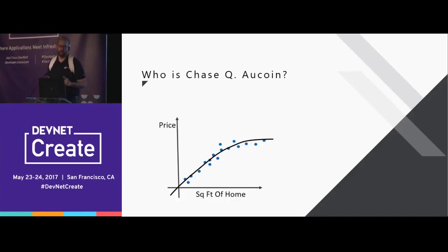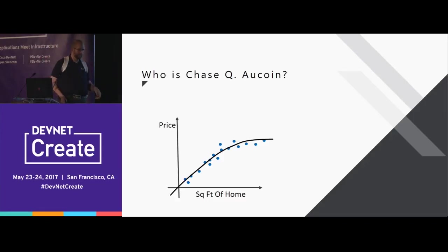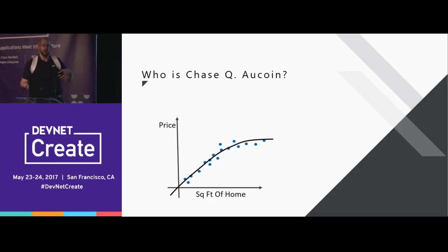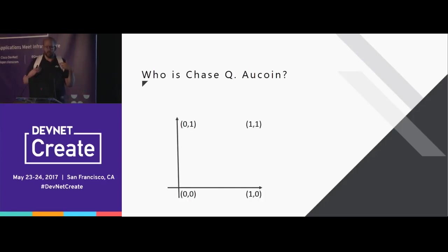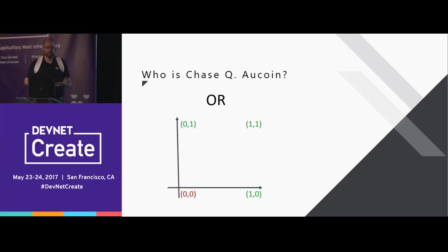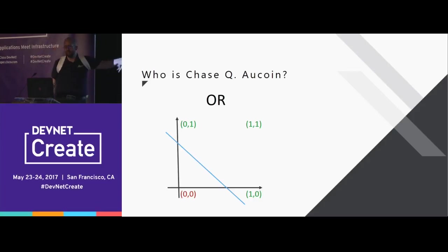With a traditional linear regression model, let's say we've got some housing data — square footage of home and price. With a linear regression model, we can figure out the general slope of that data: if we know the price, we can extrapolate the square footage. But there are very simple scenarios where this falls apart. Let's say we have four pieces of data: true-false, true-false, true-true, and true-false. For an OR function, this is easy — we can just put the line right there. Everything on this side is false, everything on that side is true.